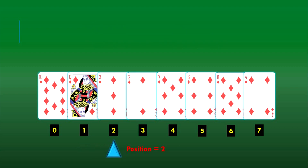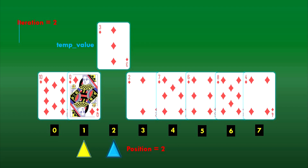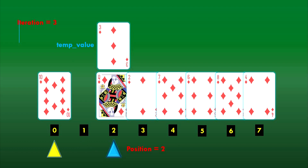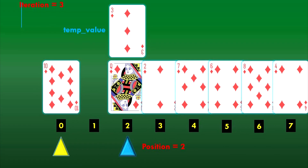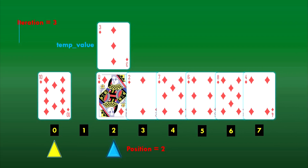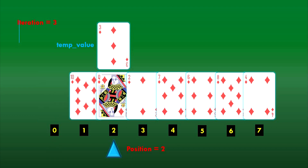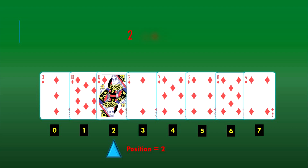Then we move on to position 2 and assign this card as the temp value. We first compare the temp value — the 3 of diamonds — with the card at index 1. The 3 of diamonds is smaller than the queen of diamonds, so we shift the queen of diamonds from index 1 to index 2, one spot to the right. We then compare the element at index 0 to the temp value. The index 0 element is also greater than the temp value, so we shift the 10 of diamonds one spot to the right. There are no more cards to compare, so the temp value occupies the empty space at index 0. At index 2, we did two iterations to ensure the cards are sorted until that position.